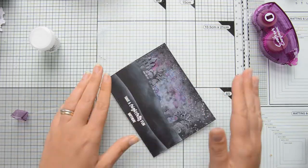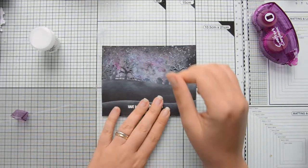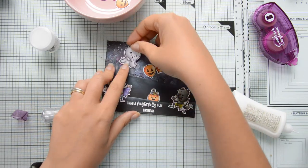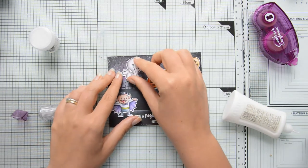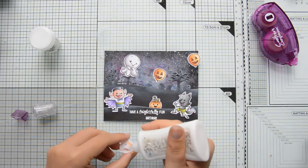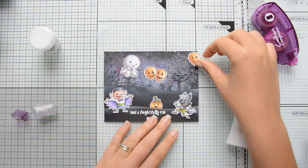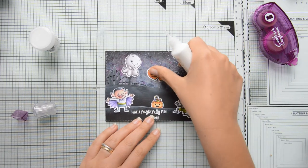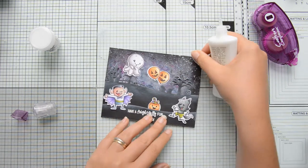At this point I had everything ready and I could go ahead and start assembling the elements and building my scene. I first adhered the two hills to the sky background and then I started gluing down all the stamped and colored images using my Nuvo Deluxe Adhesive.